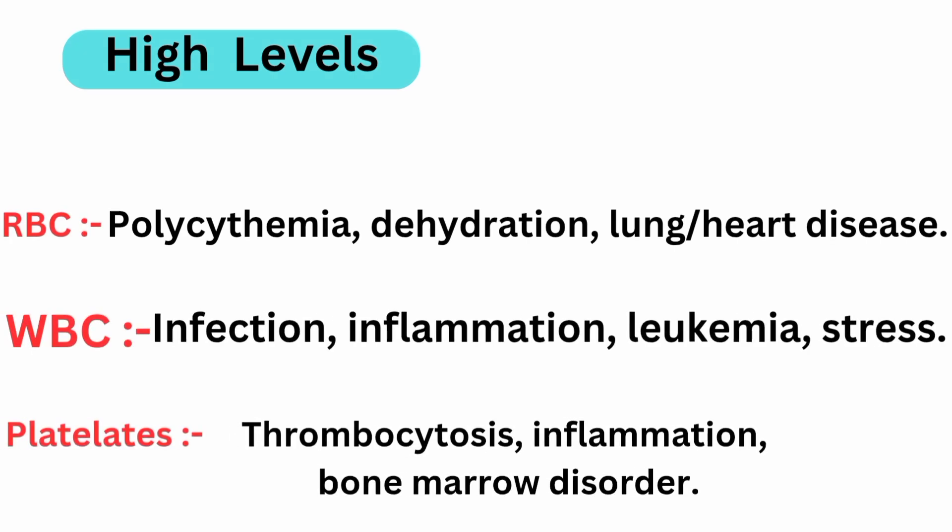High levels: High RBC indicates polycythemia, dehydration, or lung and heart diseases. High WBC indicates infection, inflammation, leukemia, or stress. Elevated platelets is thrombocytosis, associated with inflammation or bone marrow disorders.